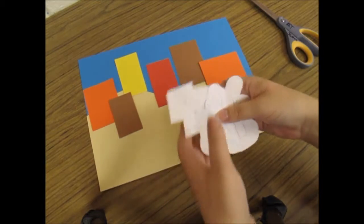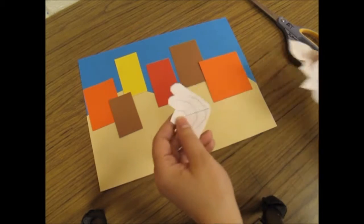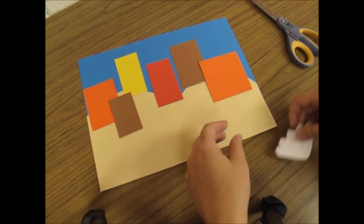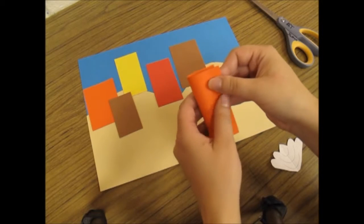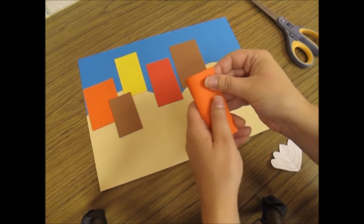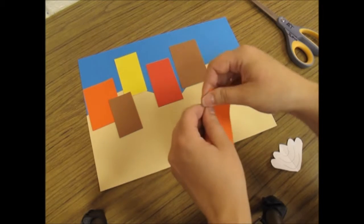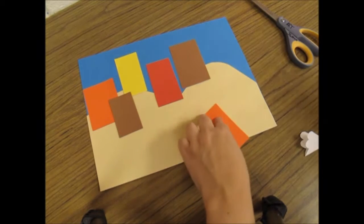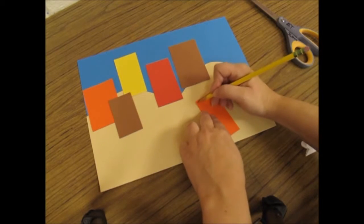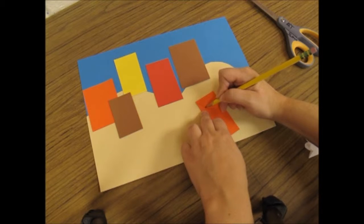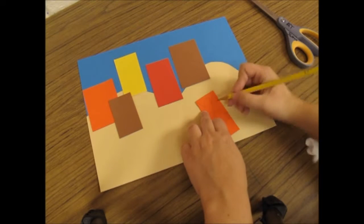We're going to do the same thing we did with the white practice ones last week. Remember everything is symmetrical. I'm folding it in half first and I'm only going to draw half of the shape. Remember to start your pencil tip on the folded line and draw away from it.